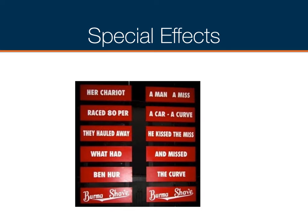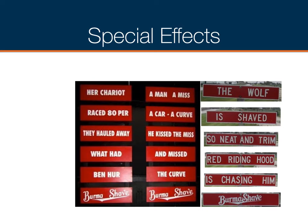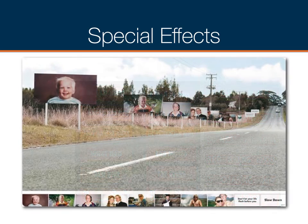Here's another Burma Shave example: 'A man, a miss, a car, a curve — he kissed the miss and missed the curve. Burma Shave.' A lot of times they had a public safety message about safe driving worked into the silly little poem. Another: 'The wolf is shaved so neat and trim — Red Riding Hood is chasing him.' And here's one more — not a Burma Shave but a safe driving ad from New Zealand, where the first panels show a little boy as a toddler getting older and older, and the message comes in the last two panels: 'Don't let your life flash before you — slow down.'